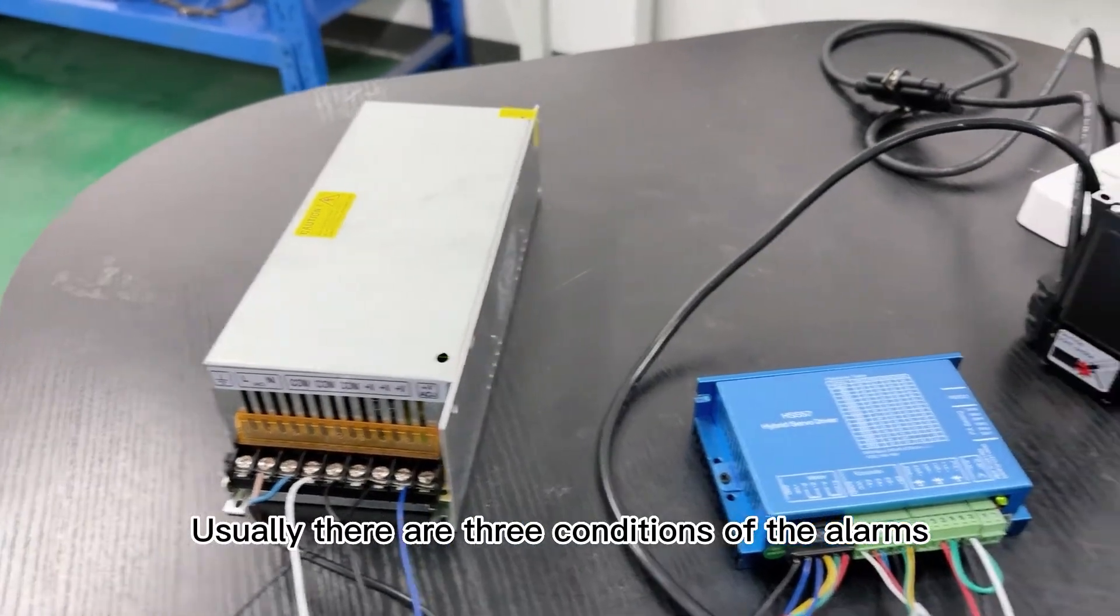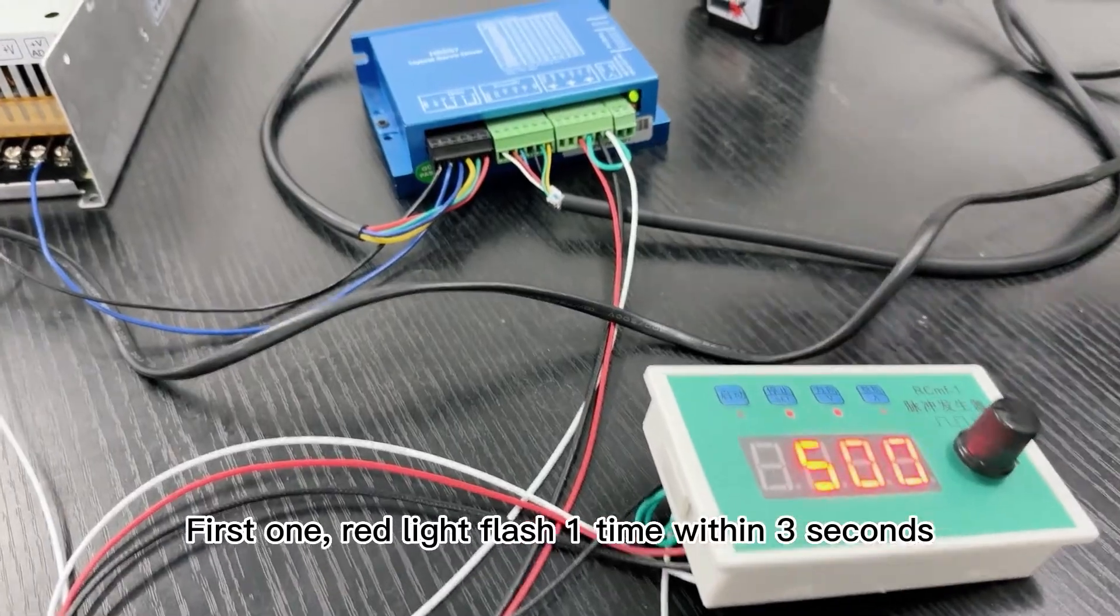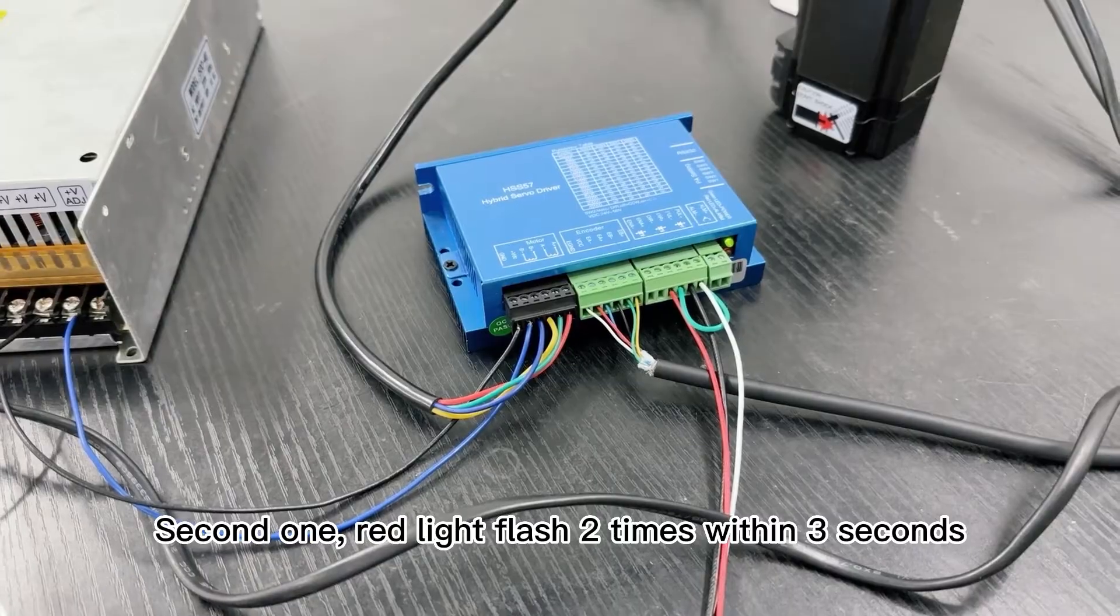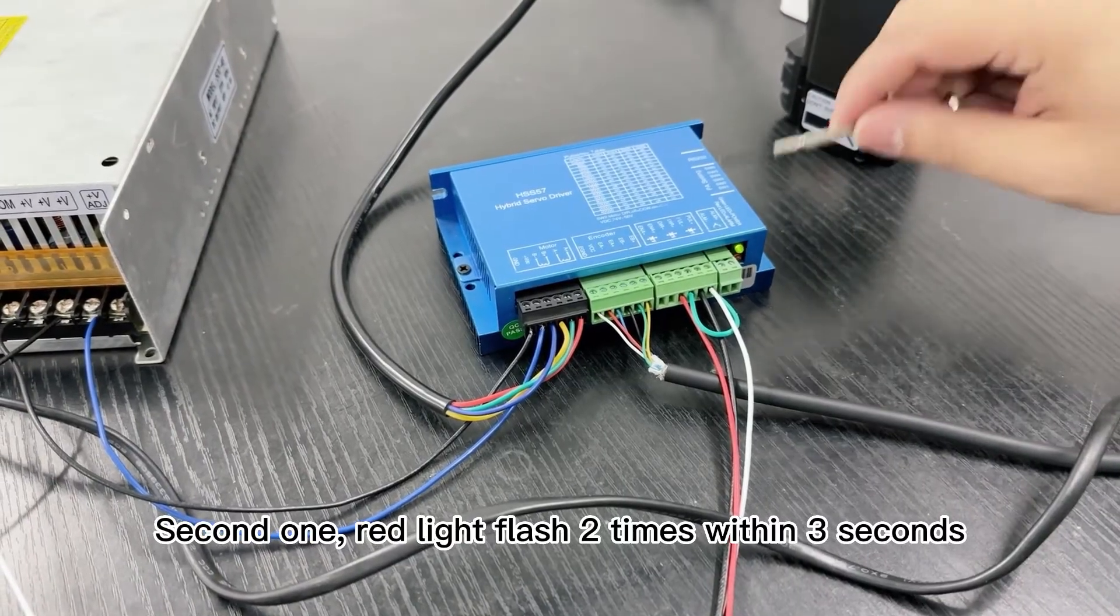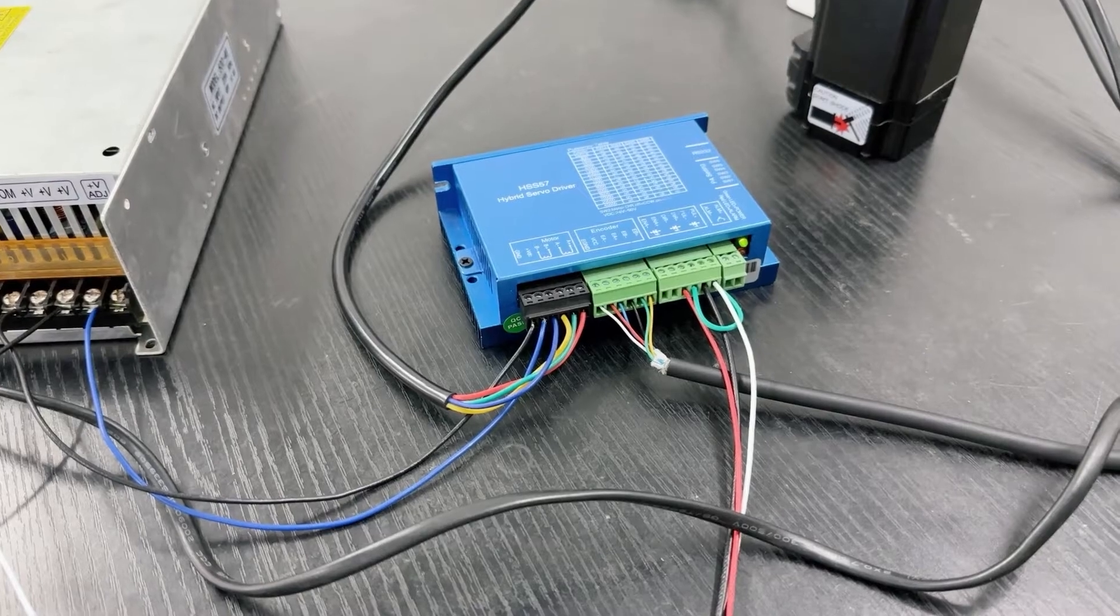Usually there are three conditions of the alarms. First one: red light flashes one time within three seconds - this is over current problem. Second one: red light flashes two times within three seconds - this is over voltage problem.